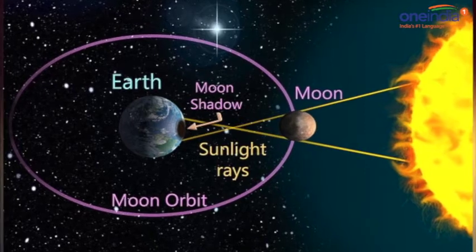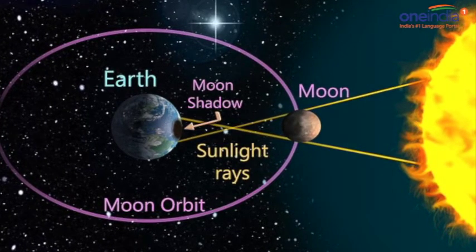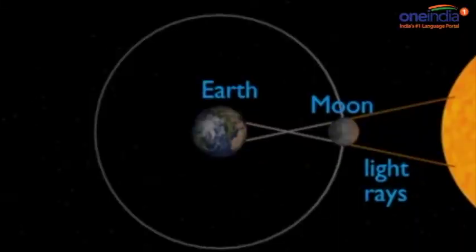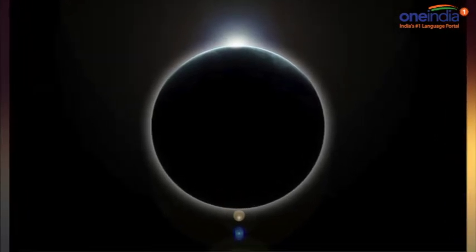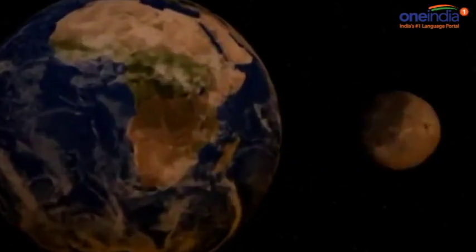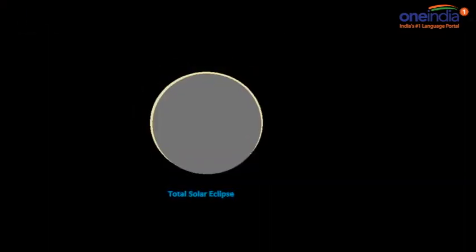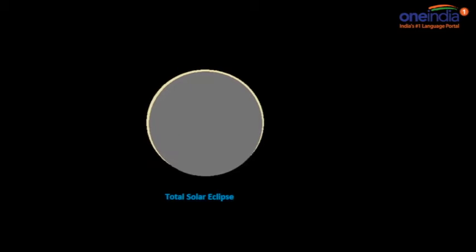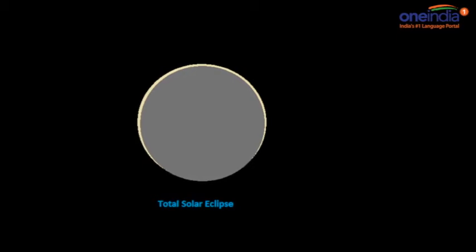An annular solar eclipse occurs when the moon and the sun are both exactly in line, but either the moon is further from the earth or the earth is closer to the sun. When this happens, the apparent size of the moon is smaller than that of the sun, and the sun thus appears as a very bright ring surrounding the dark disk of the moon. A total solar eclipse occurs when the dark silhouette of the moon completely covers the intense bright light of the sun. Only the much fainter solar corona is visible during a total eclipse.